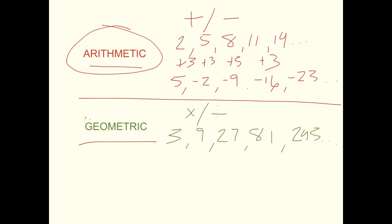And then you could do division. You could start with like 100, and then you divide by 2 — which really, division is merely just multiplication by a fraction. So instead of dividing by 2, you're really just multiplying it times 1/2. So we divide by 2, so it's 50. Divide by 2 is 25. Divide by 2 is 12.5. Divide by 2 is 6.25.